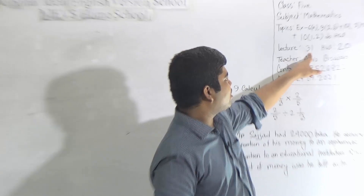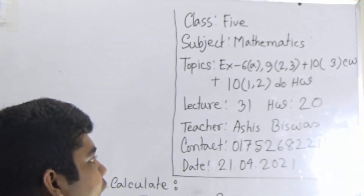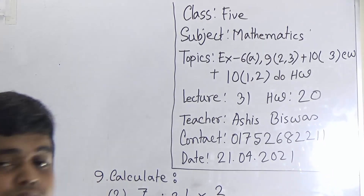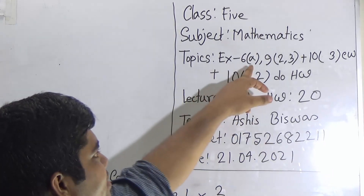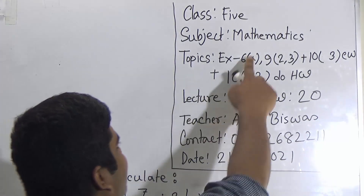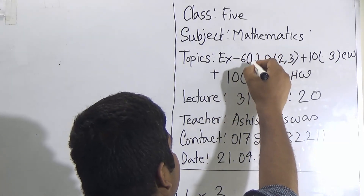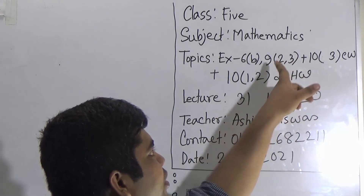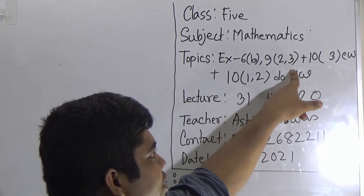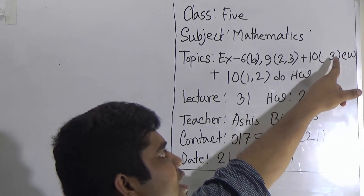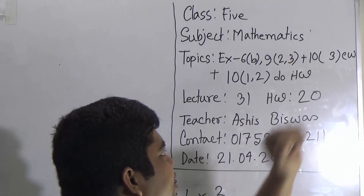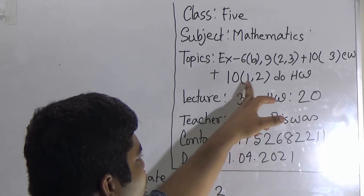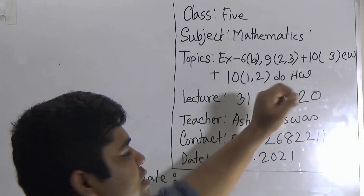Today is our lecture number 31 of half early, and today's HW number will be 20. Dear students, our today's topic is Exercise 6B. From that chapter we shall solve question number 9 and 10. From question 9 we shall solve 2 and 3, and from question 10 we shall solve 3, which is a word problem. This is CW. And from question 10, problems 1 and 2 are SW.